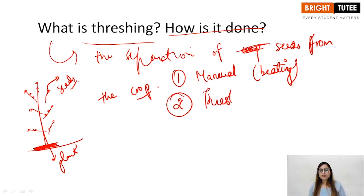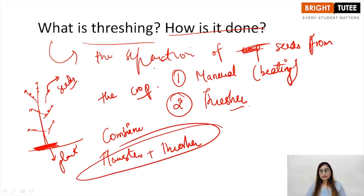Secondly, it is done with the help of a thresher. And also there is a third machine known as combine, which is a combination of harvester and a thresher, which can be utilized to perform both the activities simultaneously.